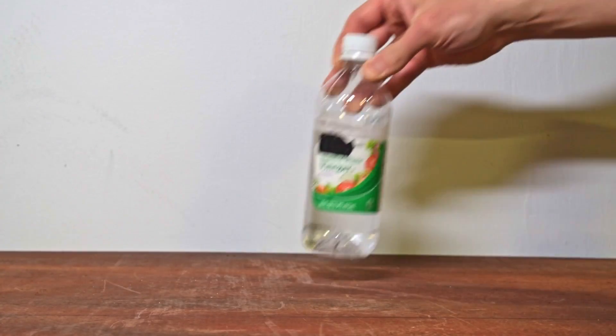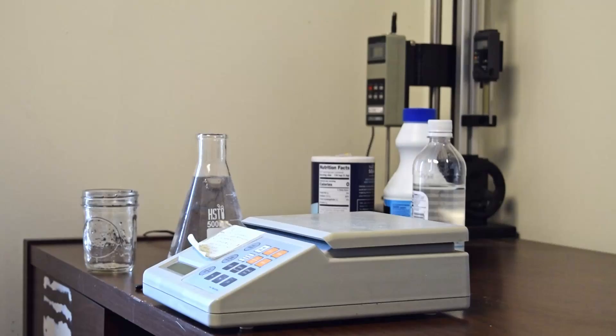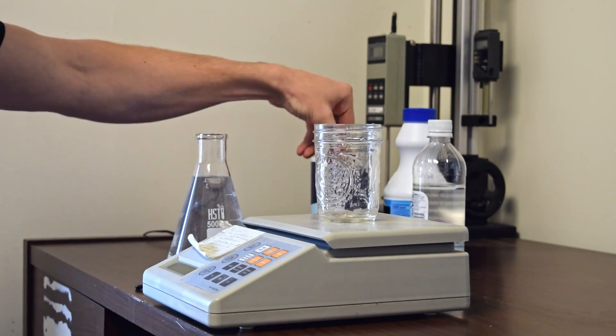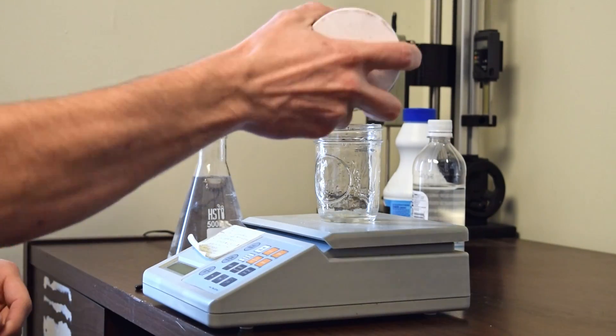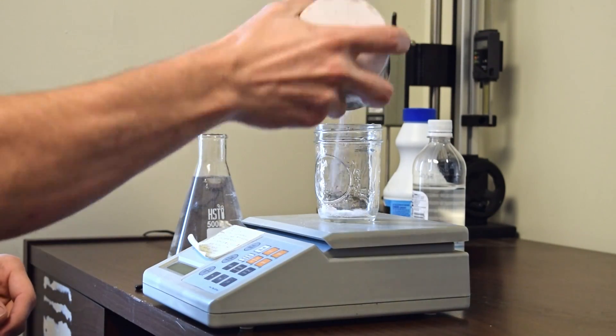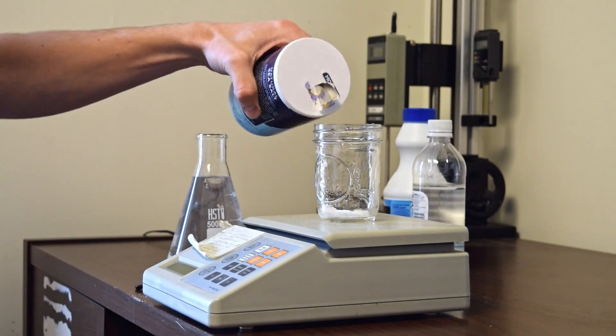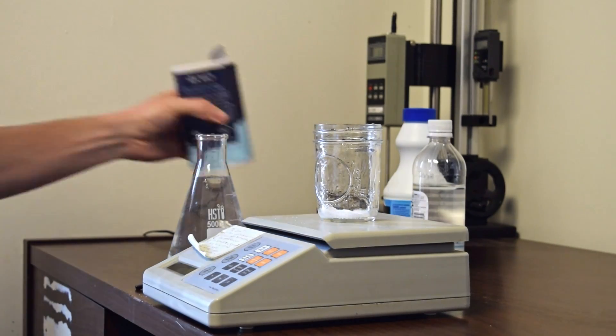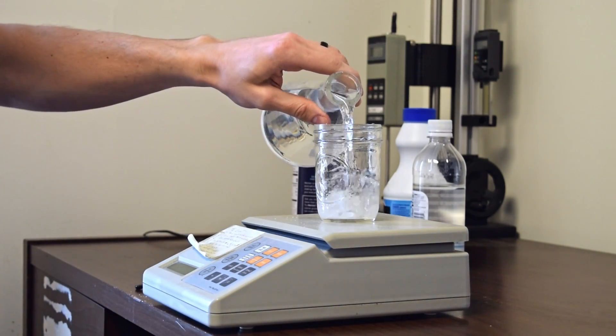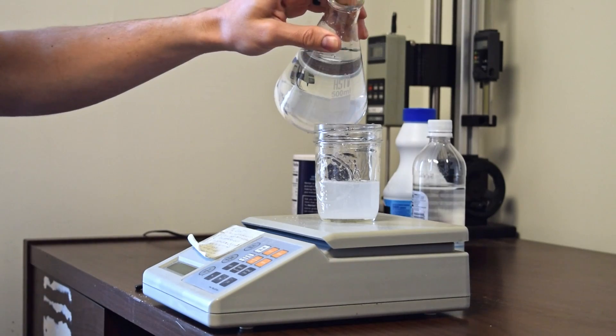We'll test salt water, a vinegar solution, and a bleach cleaning solution. For the salt water, we measured the salt to be about 40 parts per thousand, which is the salt content of the Red Sea, the saltiest sea in the world.